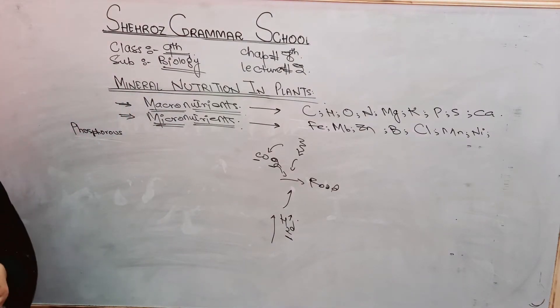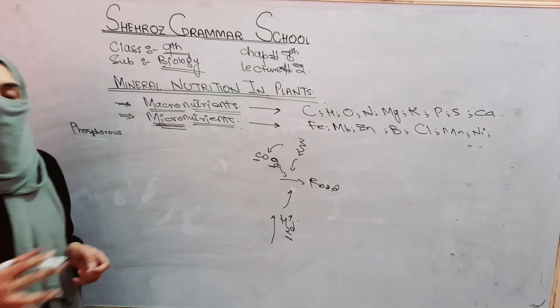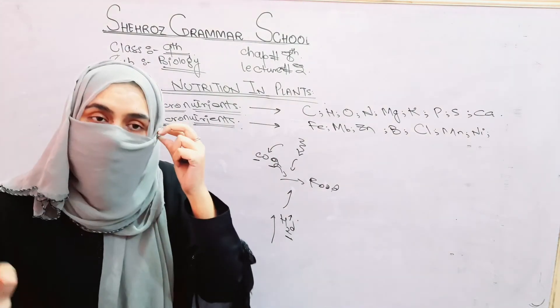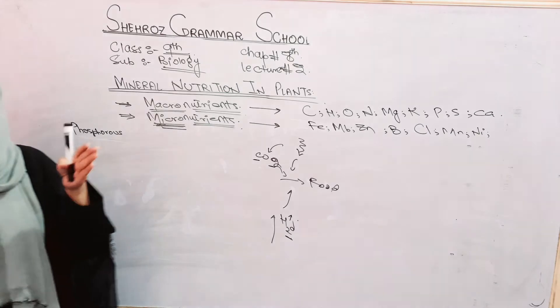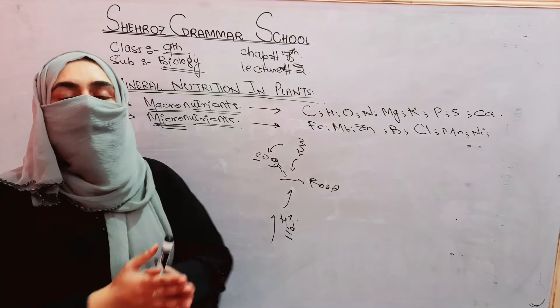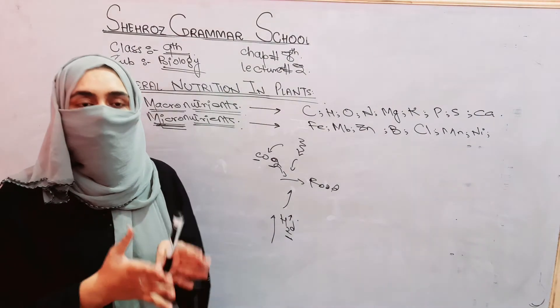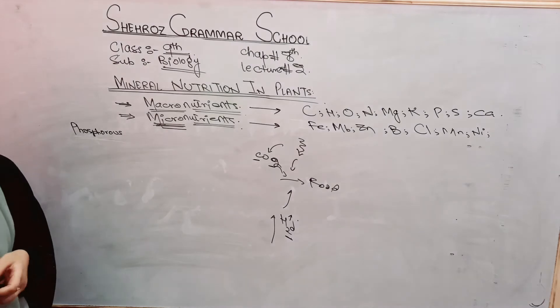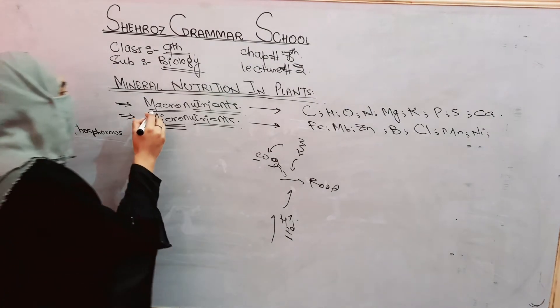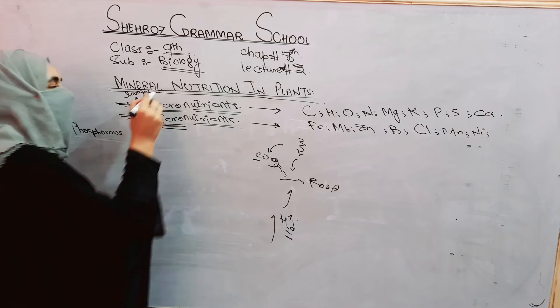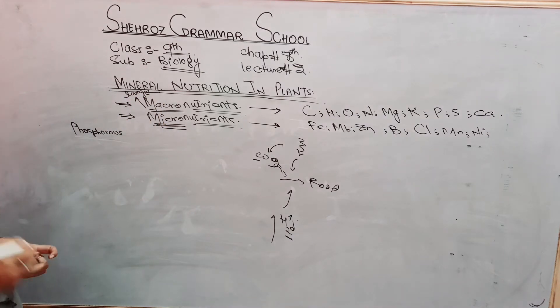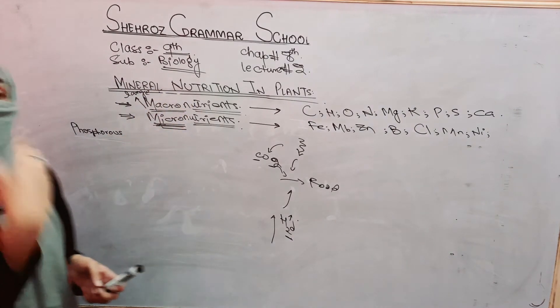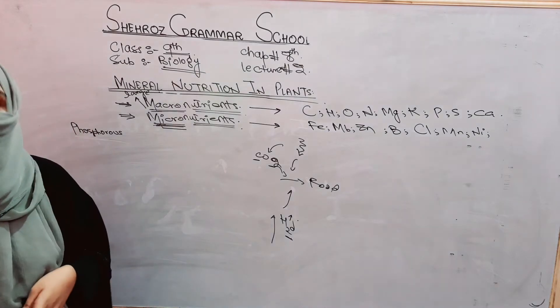Nutrients have macronutrients and micronutrients. There are some nutrients that plants need in large quantity - we call them macronutrients. Macro means large, nutrients means elements. These are minerals which plants need in large quantity, which we call macronutrients.